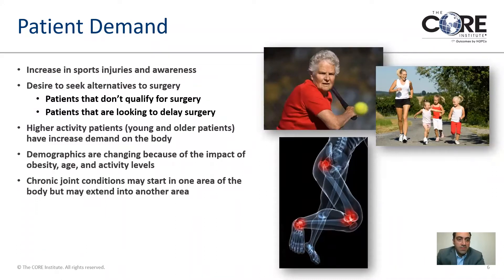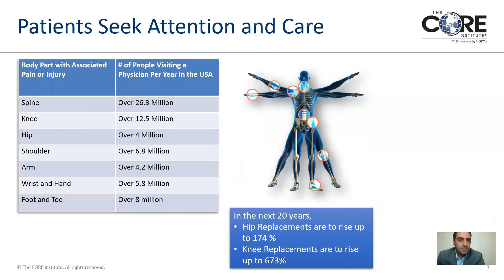Demographics are changing because of the impact of obesity, age, and activity levels. Chronic joint conditions may start in one area of the body but may extend into another area, especially as you see in this photo, where it's one big kinetic chain from the ankle to the knee to the hip. You can see the number of people visiting the physician per year — spine being number one, and the knee coming in at 12.5 million patients. Over the next 20 years, we certainly expect hip replacements and knee replacements to increase significantly.